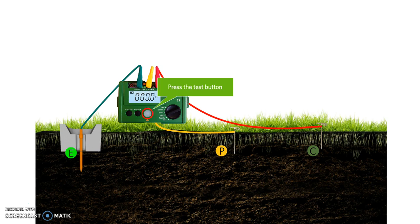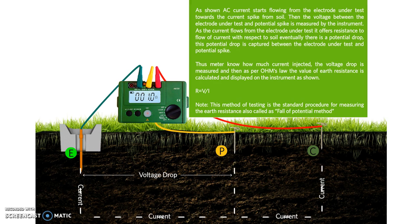As shown, the current starts flowing from the electrode under test towards the current spike. The voltage between the potential spike and the electrode under test are measured by the instrument. As current flows from the electrode, it offers a resistance to flow of current with respect to soil.